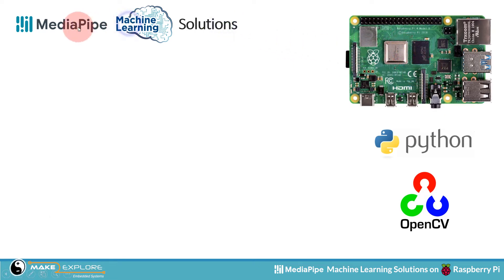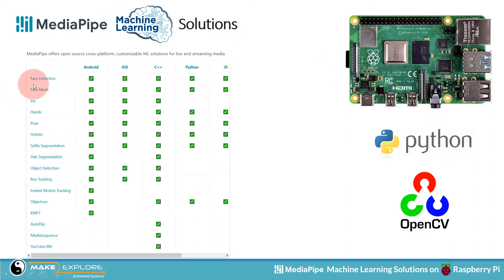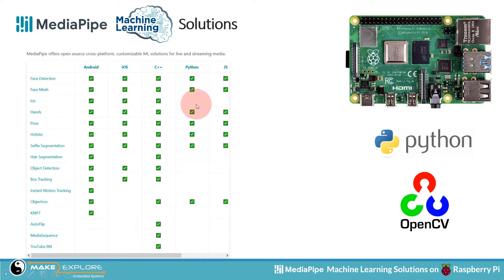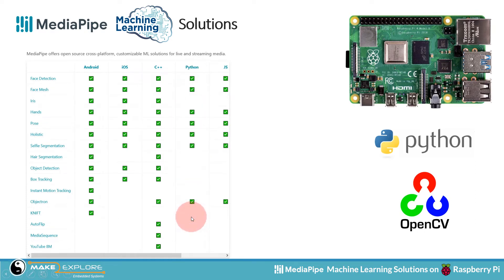Now we will see how to run different MediaPipe ML solutions supported on Raspberry Pi. By 'supported' we mean that among all MediaPipe solutions, not all of them work on Raspberry Pi — most of them do, but a few are not yet supported. Let me show you by going to the MediaPipe website.